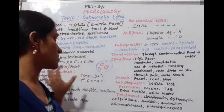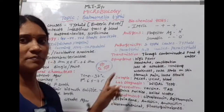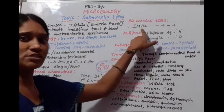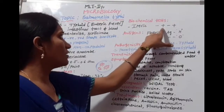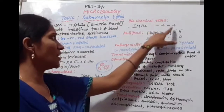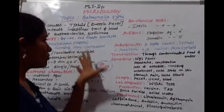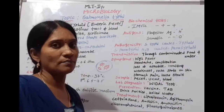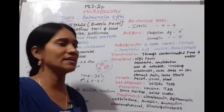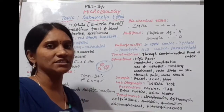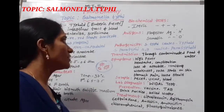The biochemical tests are IMVIC tests. IMVIC stands for: I — Indole, M — Methyl Red, VI — Voges-Proskauer, C — Citrate. For Salmonella typhi: Indole is negative, Methyl Red is positive, Voges-Proskauer is negative, and Citrate is positive. These IMVIC tests differentiate Salmonella typhi from other organisms. Salmonella typhi also consists of two types of antigens: flagellar antigen (H) and somatic antigen (O).